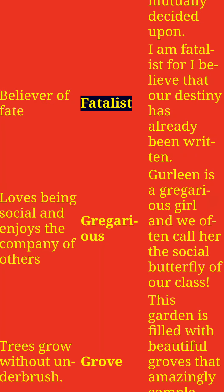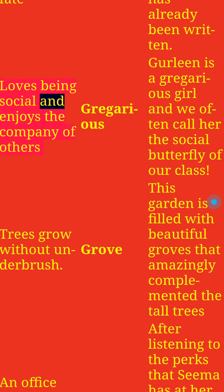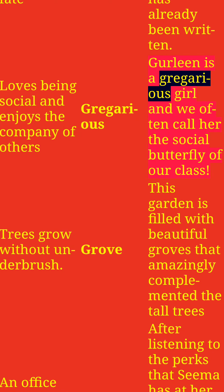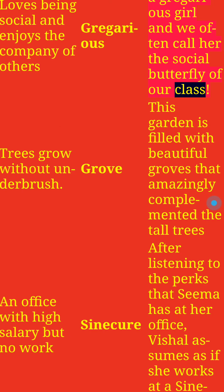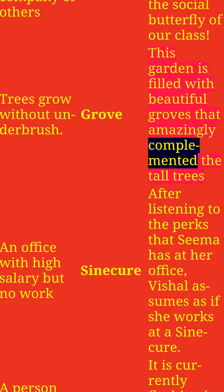Believer of fate: Fatalist. I am a fatalist for I believe that our destiny has already been written. Loves being social and enjoys the company of others: Gregarious. Girline is a gregarious girl and we often call her the social butterfly of our class. Trees that grow without underbrush: Grove. This garden is filled with beautiful groves that amazingly complemented the tall trees.